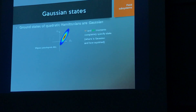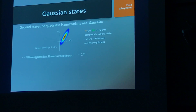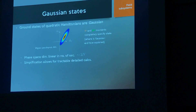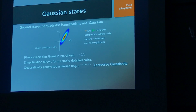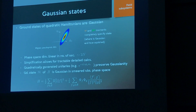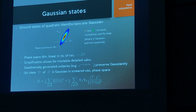A quick lightning review of Gaussian states: ground states of quadratic Hamiltonians are Gaussians, fully specified by where they are and how they're squeezed, with phase space growing linearly in the number of oscillators. This allows detailed calculations of energy and entropies. Any quadratically generated unitary preserves Gaussianity. We'll work in the Gaussian state formalism throughout, and the ground state of the quadratically coupled Hamiltonian is Gaussian in terms of the smeared observables.